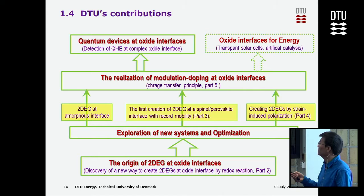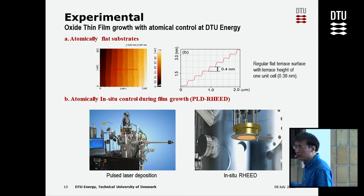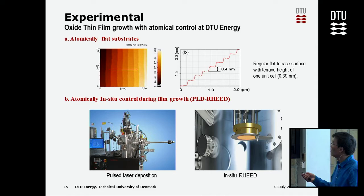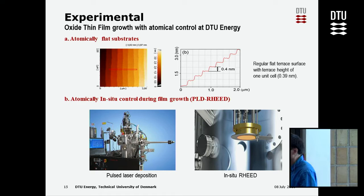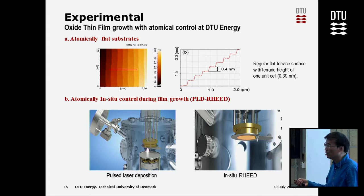Before going to the results, I'll show you how we do this. To precisely control the interface, you need two things. First, you need an atomically flat substrate — the plate where you put your materials on — and we can control the substrate as flat as one unit cell, which is 0.4 nanometer scale.